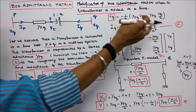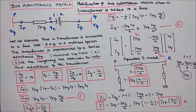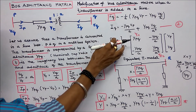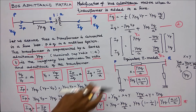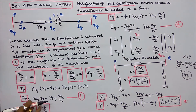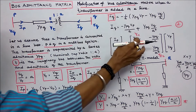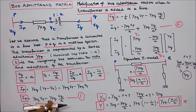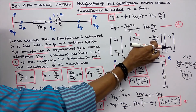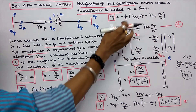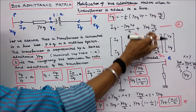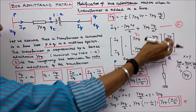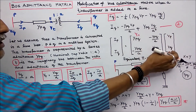Equations 1 and 2 can be written in matrix form as: [IP, IQ] equals [YPQ, minus YPQ divided by A; minus YPQ divided by A, YPQ divided by A squared] multiplied by [VP, VQ].